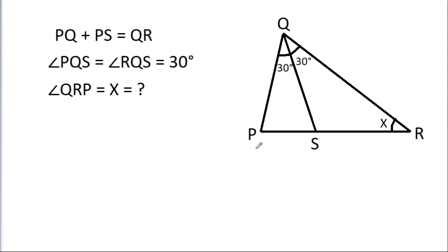In this video, we have given that pq plus ps is equal to qr, angle pqs is 30 degrees, angle rqs is 30 degrees, and then we have to find angle x.